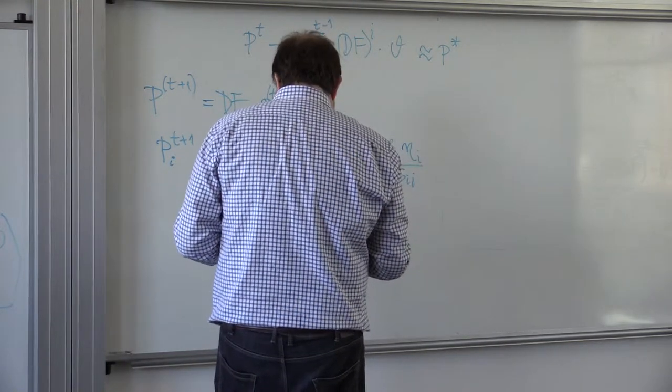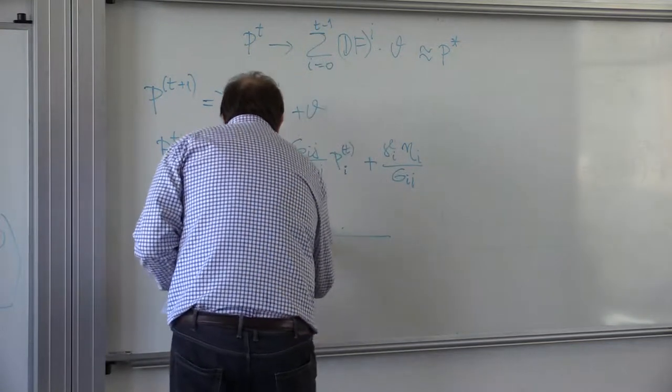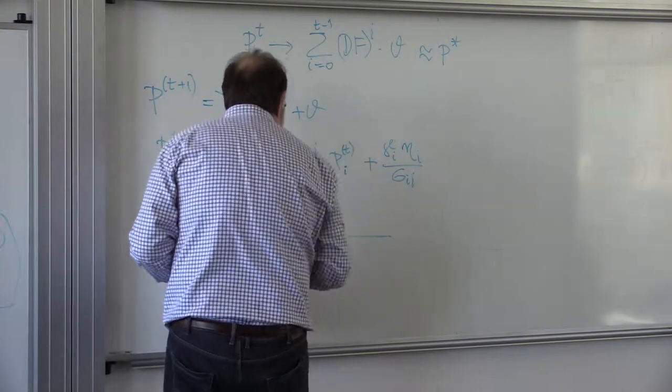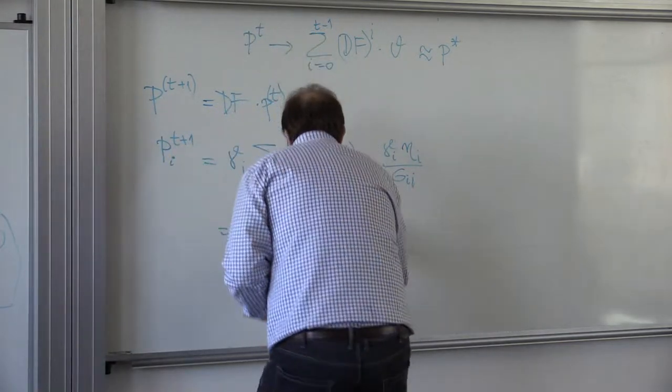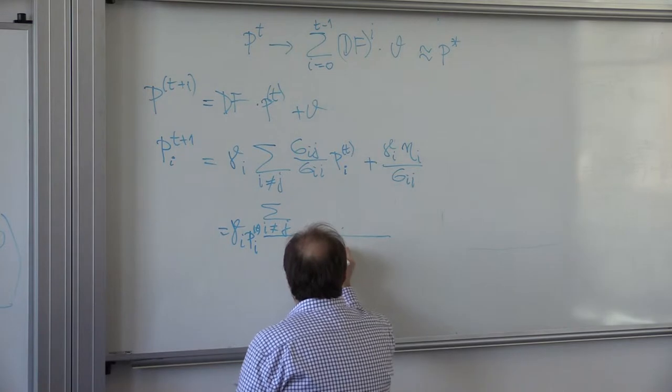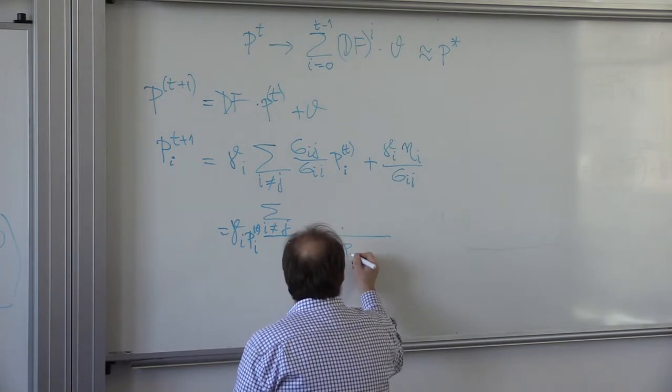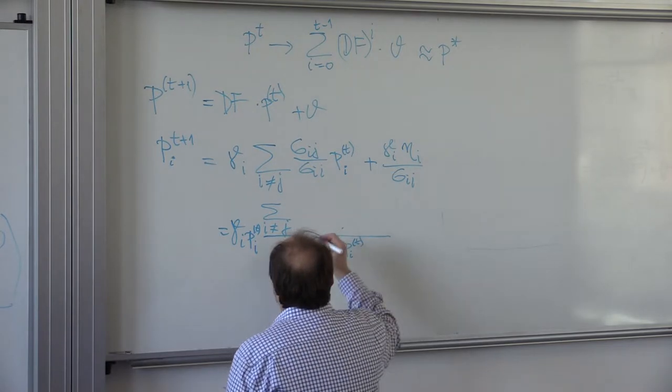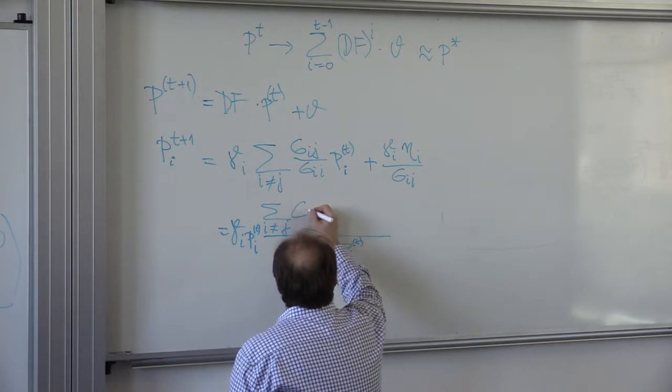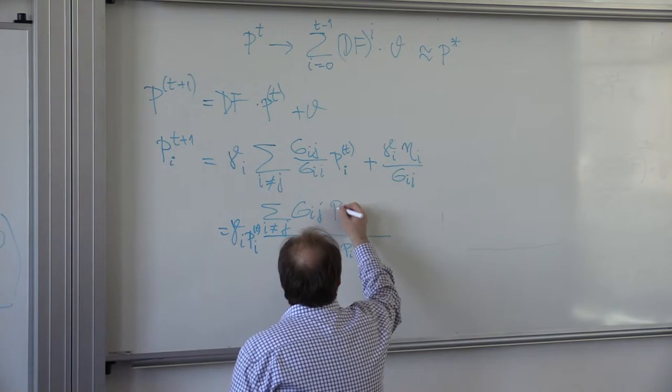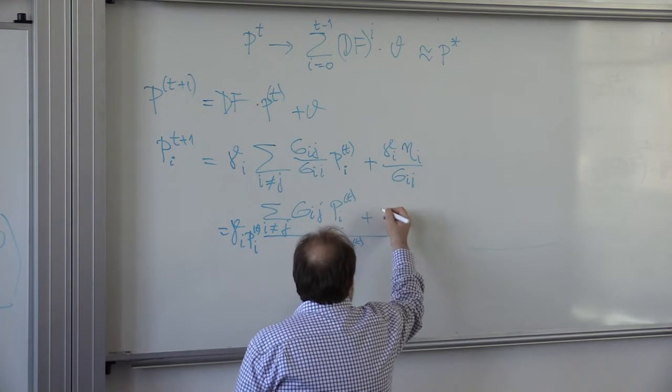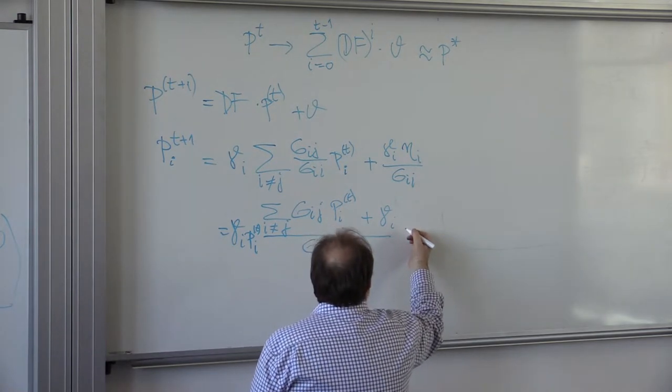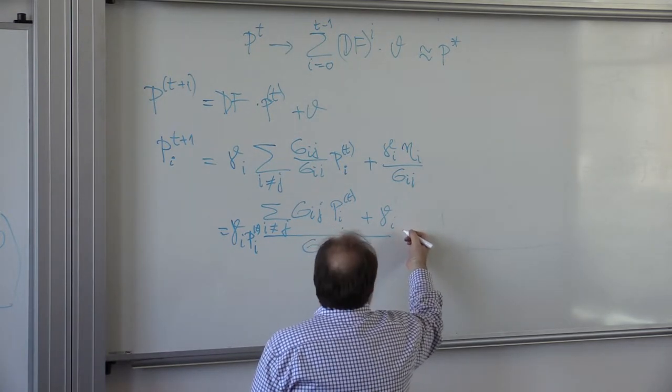Then what I'm going to do is, I'm going to multiply by PIT, and divide Gii by PIT, right, and then I'll have here Gij BIT plus gamma I, eta I.